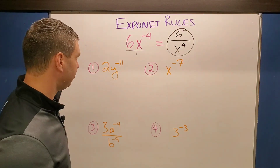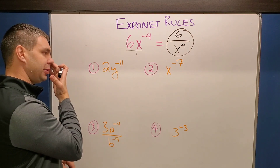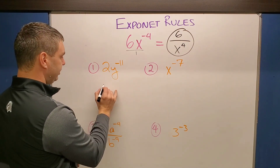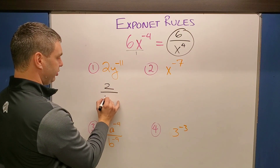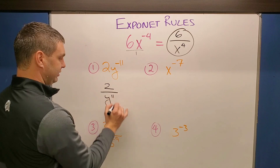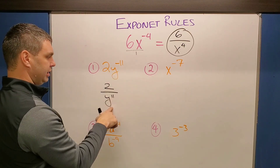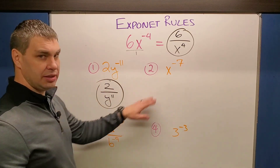Let's try a couple of examples. On number one, this is going to become two over y to the positive 11. Remember, it goes to the bottom and becomes positive. So that's the final answer there.